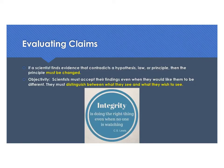Finally, when we are evaluating claims, we need to do two things. If a scientist finds evidence that contradicts a hypothesis, a claim, a law, or a principle that they have, then that hypothesis, law, claim, or principle must be changed. This is what we talk about when we talk about objectivity. Scientists must accept their findings even when they would like them to be different. They must distinguish between what they see and what they wish to see. That is a summary of ideas about experimental design and how we test claims. Hopefully, between yesterday's Pogel and these notes, you have a much better idea.